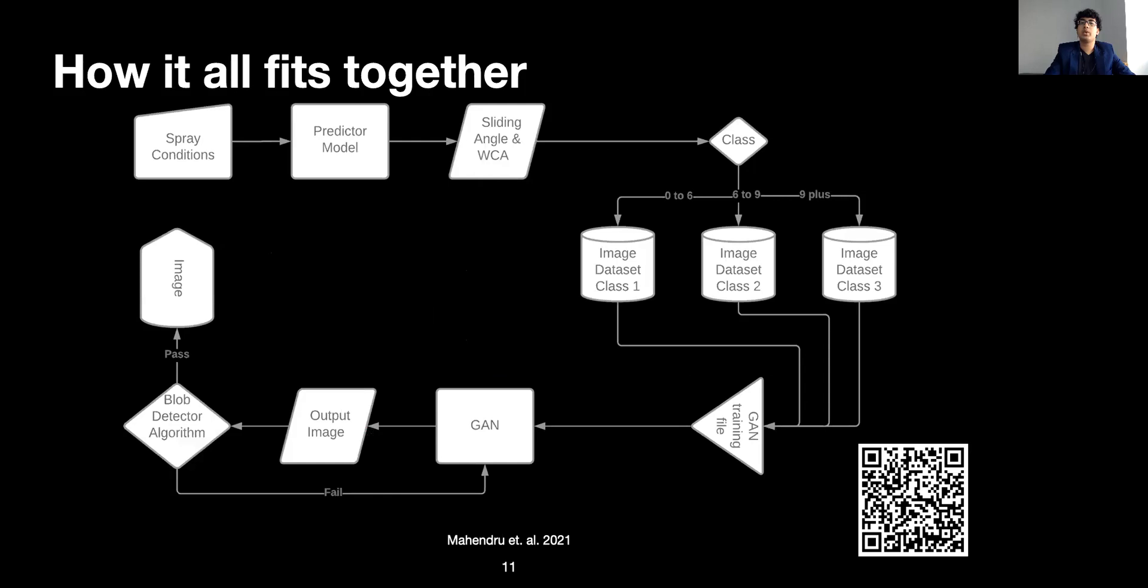How it all fits together is as follows. You input spray conditions which go into the predictor model. The predictor model predicts sliding angle and water contact angle, which corresponds to a class of image datasets dependent on the sliding angle. This goes to the GAN and the GAN in turn produces an image. The image is verified by the blob detector algorithm, which can either pass or fail an image. If this image passes, we can see it again. If it does not, it sends it back to the GAN to generate a new image.